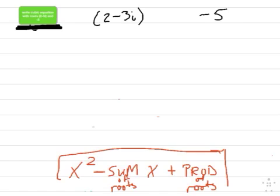So those are two of my roots. If it's a cubic, it's got one more root, which is the conjugate of that. So it's 2 plus 3i. So my three roots are 2 minus 3i, 2 plus 3i, and negative 5. So let's write our equation out.